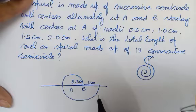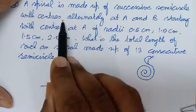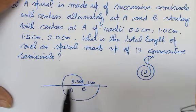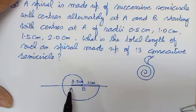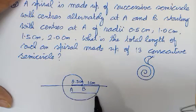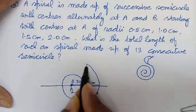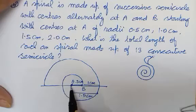Ab uske baad kya kiya jaayega? Starting with centers alternately at A and B — ab phir B ki jagah phir se A pe rakho. A pe rakha to yeh bana, B pe rakha to ab yeh 1 cm ho gaya. Ab phir se A pe rakh do. Agar A pe aap rakhoge, to ab 1.5 cm hua. A pe needle rakhi hai aur 1.5 ka lete hue, A ko dhyan mein rakhte hue semicircle banao — center pe A aaya aur yeh 1.5 ho gaya.